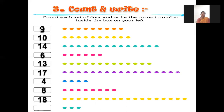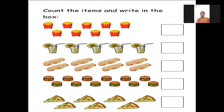And last is 3. Got it everybody? You have to practice at home. Now we will count these items: 1, 2, 3, 4, 5, 6, 7, 8, 9. So we will write 9. Lemon juice: 1, 2, 3, 4, 5 — we will write 5.